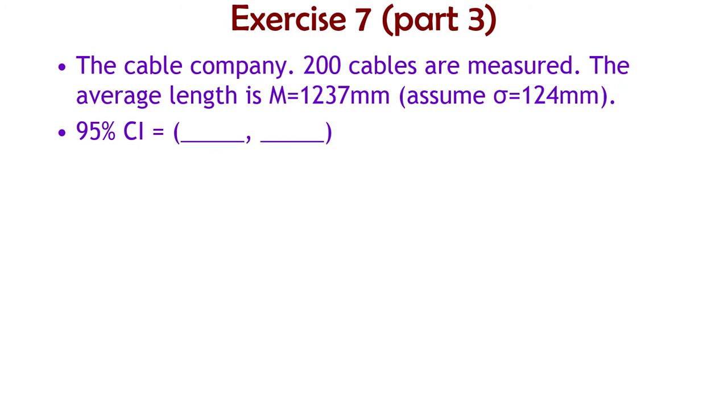So back to the issue with the cable company. You've got a sample of 200 cables and the sample length is 1237 millimeters. And assume that for some reason we know the population mean is 124 millimeters. Find the 95% confidence interval for this mean of 1,237 millimeters.